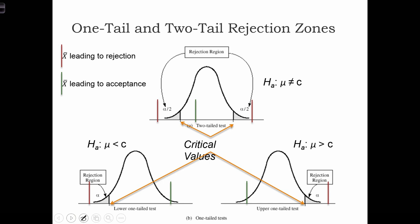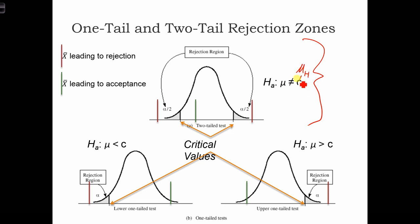Let's see what this looks like graphically. Suppose we have a two-tailed test. This figure here is for a two-tailed test. In this case, the alternative hypothesis is that mu, the population mean, is not equal to c. The sampling distribution is centered on c.